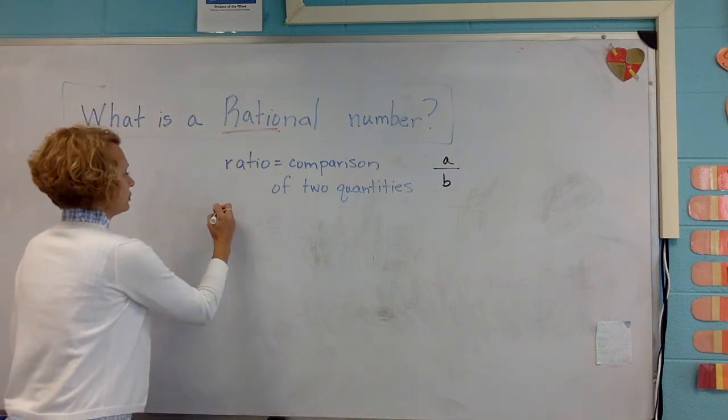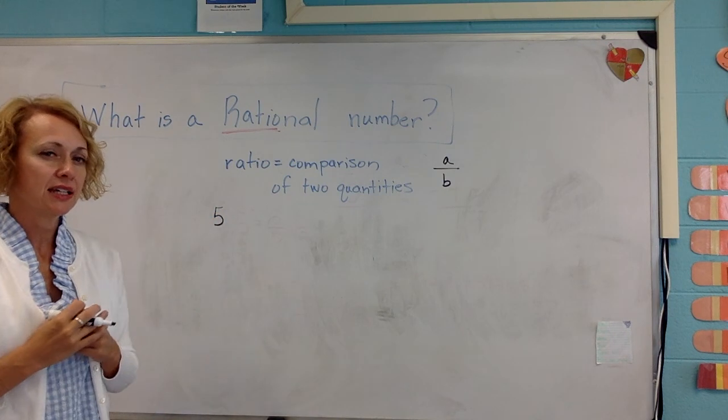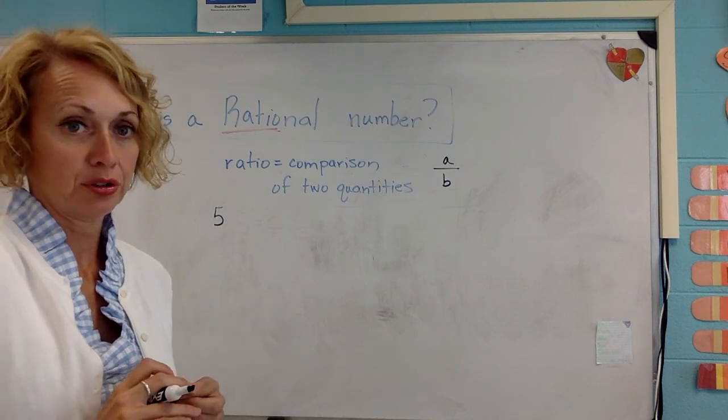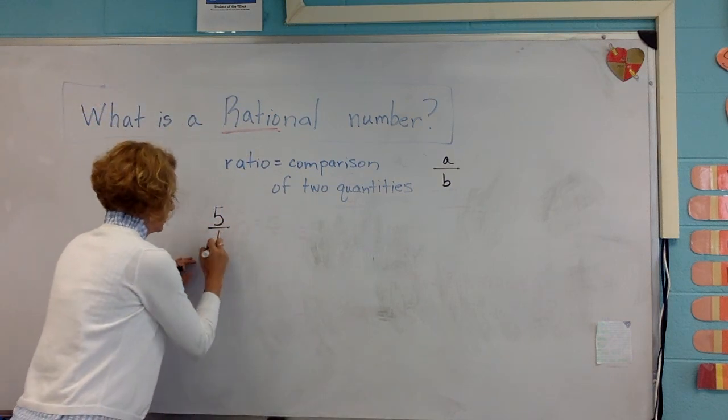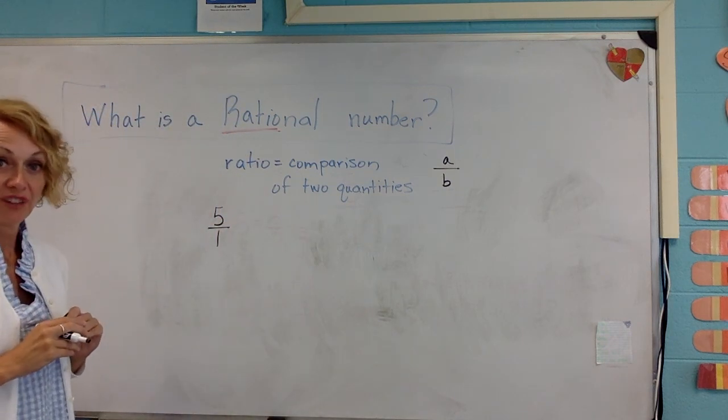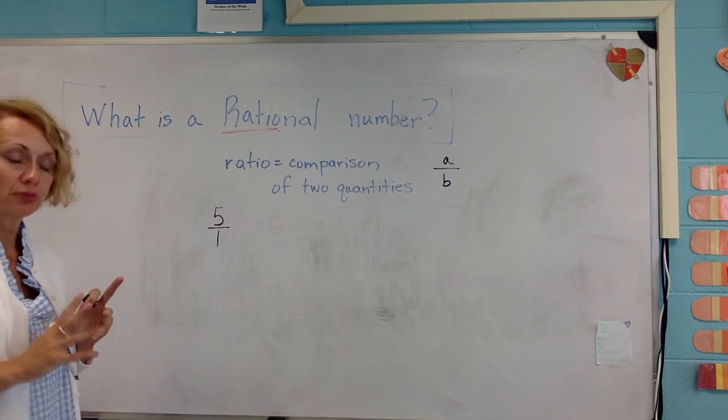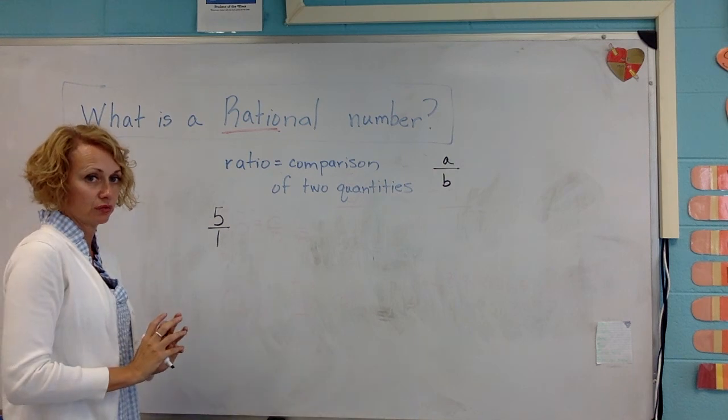So let's say I give you five. I say is five the whole number a rational number? I want you to say yes it is because I can write that thing as a fraction, five over one. Remember any whole number value can be written as a fraction if you write its value over one.